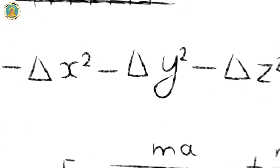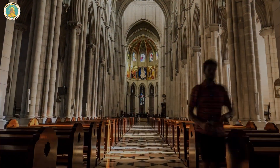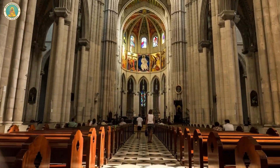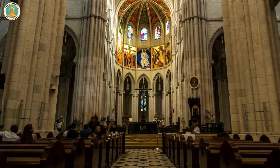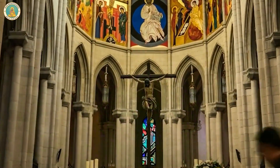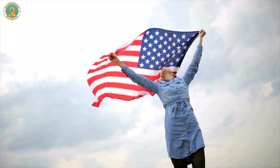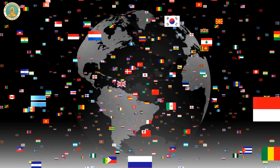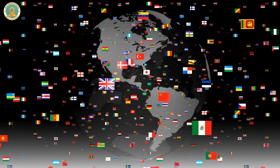Across civilizations, symbols have been used to represent ideas, values, beliefs, and even entire cultures. They have the power to convey meaning and evoke emotions without the use of words. And they can be found in every aspect of our lives — from flags that represent nations, to logos that represent entire companies.